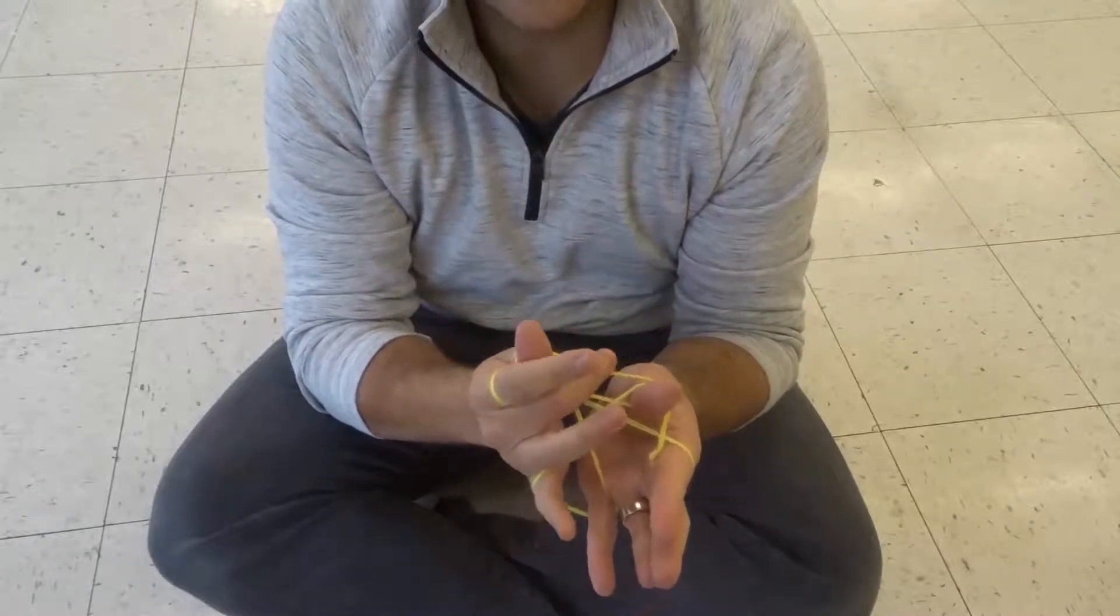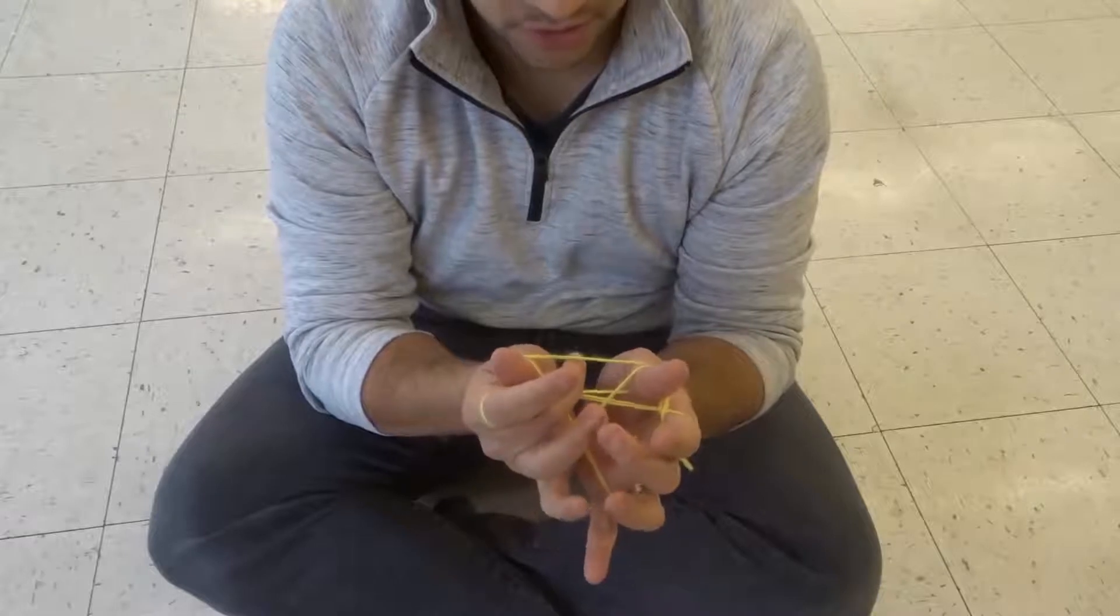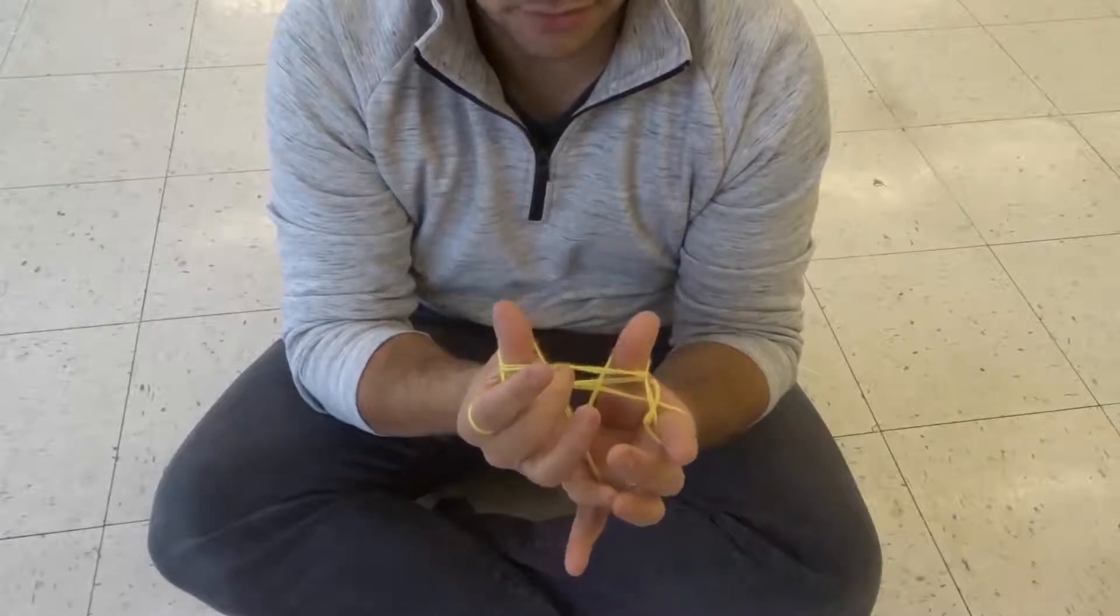Now there's going to be a lower string that goes all the way across both thumbs. You're going to lift that over each of your thumbs just like that.